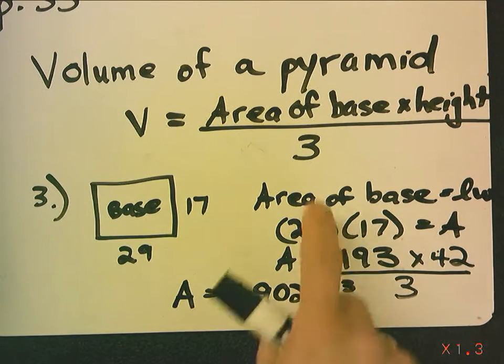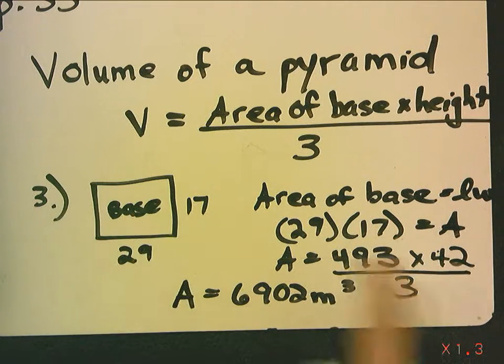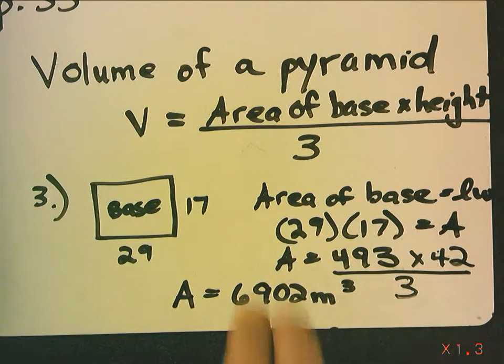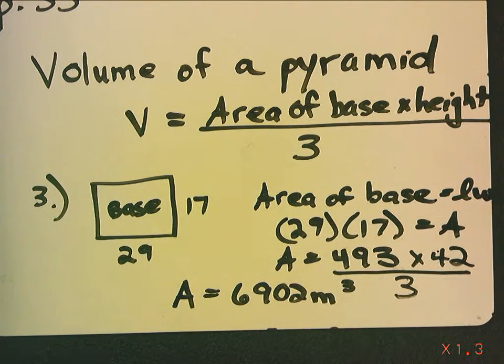And I do area of the base times the height divided by three. So, the only difference between volume of a pyramid and volume of a cylinder and prism is for a pyramid, you divide by three. And for a cylinder and prism, you don't.